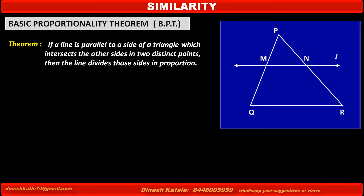Now, to prove this theorem, we have to write: Given, To Prove, Construction, and Proof. First, see what we write in Given. We have drawn triangle PQR and in this diagram we have drawn line L which is parallel to side QR. So, in triangle PQR: line L is parallel to side QR.